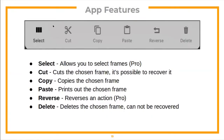'Select' lets you select frames for merging, but this is a pro feature. 'Cut' removes the chosen frame, though it can be recovered with undo. 'Copy' copies the chosen frame. 'Paste' prints out the chosen frame. 'Reverse' undoes an action — so if you made an edit or deleted a frame by mistake, you can click reverse to undo it. 'Delete' deletes the chosen frame permanently and cannot be recovered.